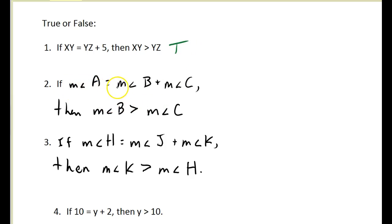Now, if the measure of angle A equals the measure of angle B plus the measure of angle C, then is the measure of angle B greater than measure of angle C? Well, we know definitely that measure of angle A is bigger than either angle B or angle C. We don't know anything about the relative sizes of angle B or C, so that is going to be false.